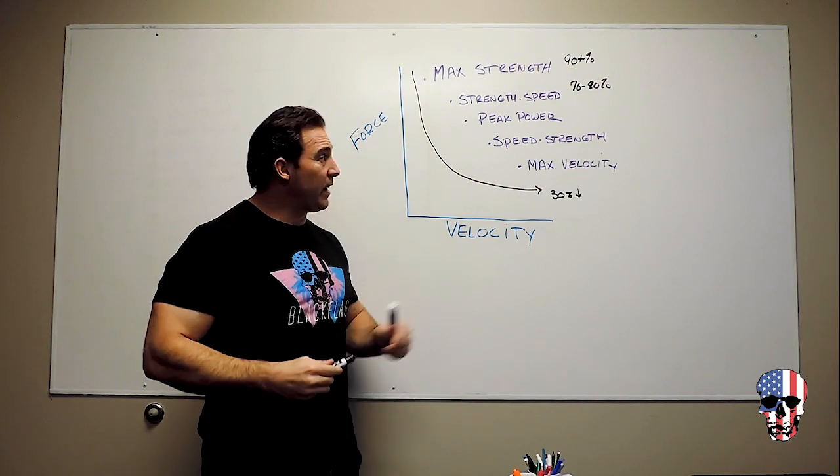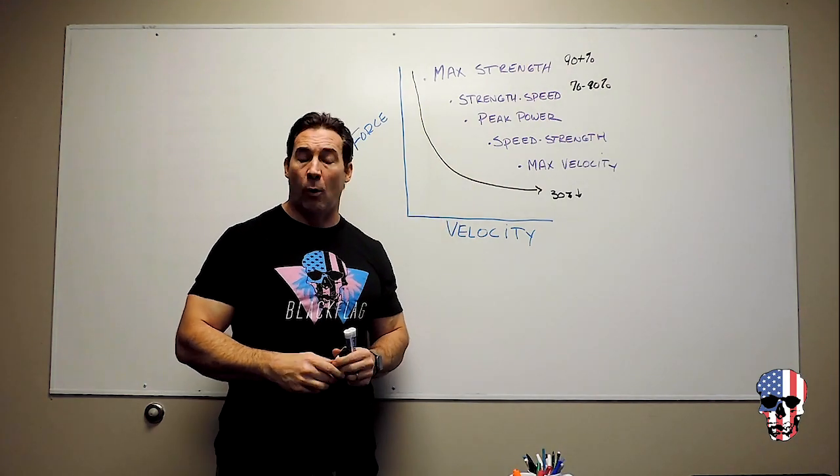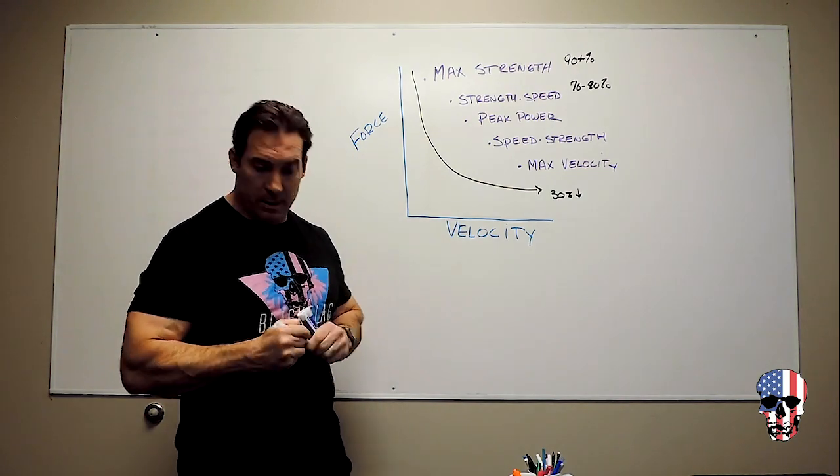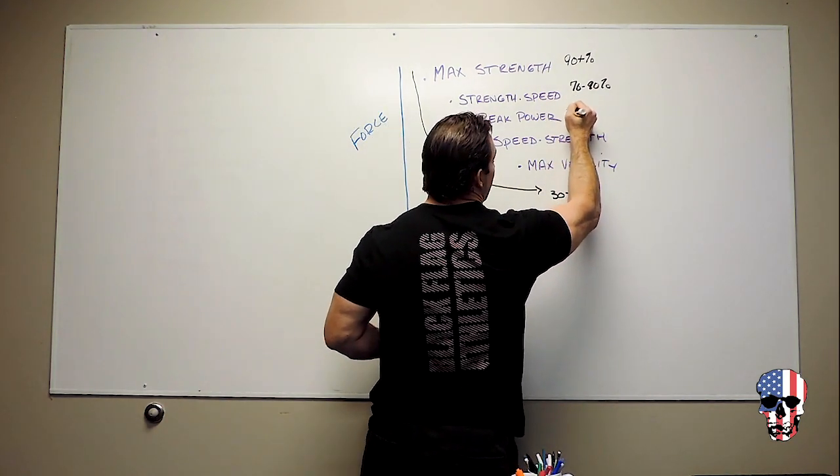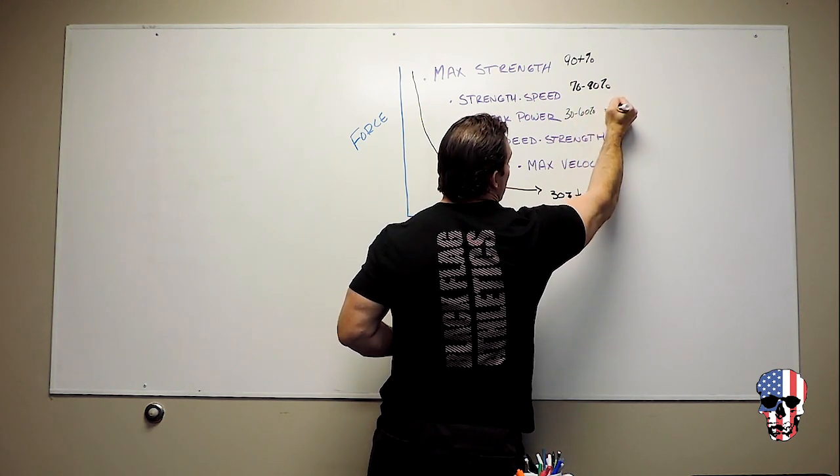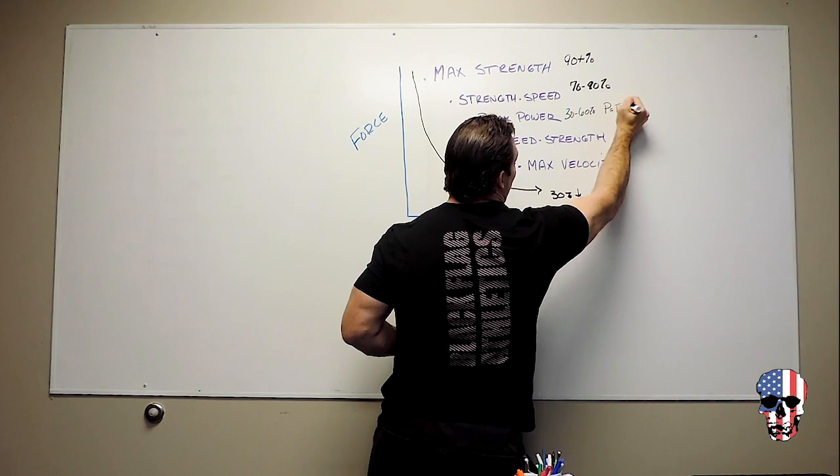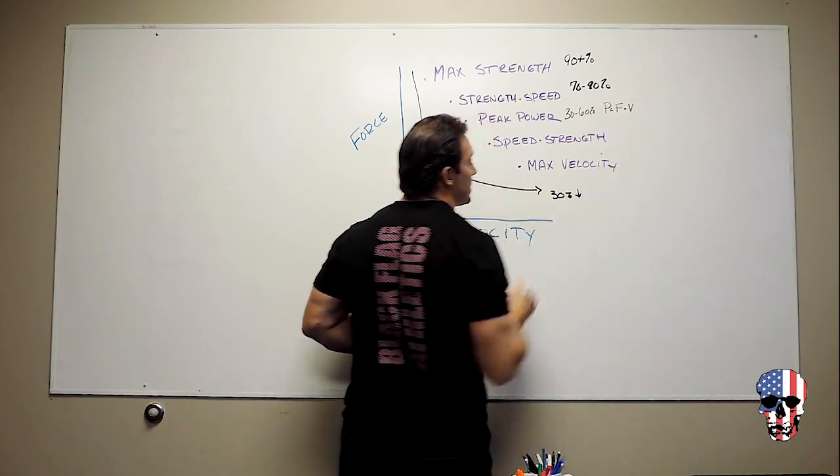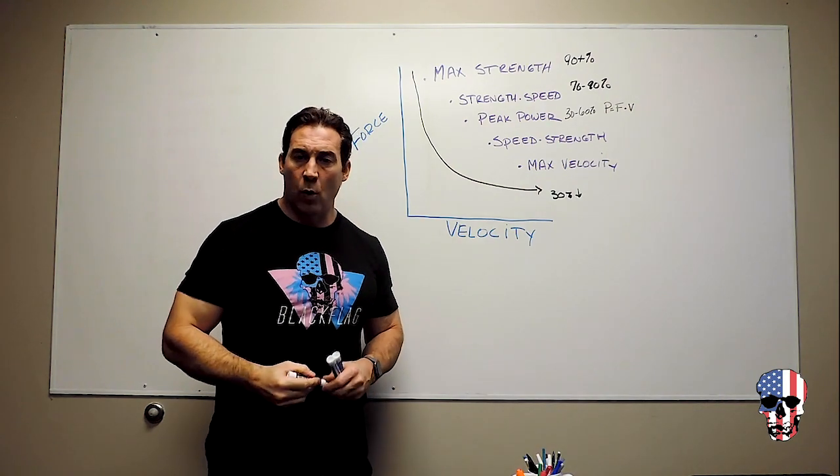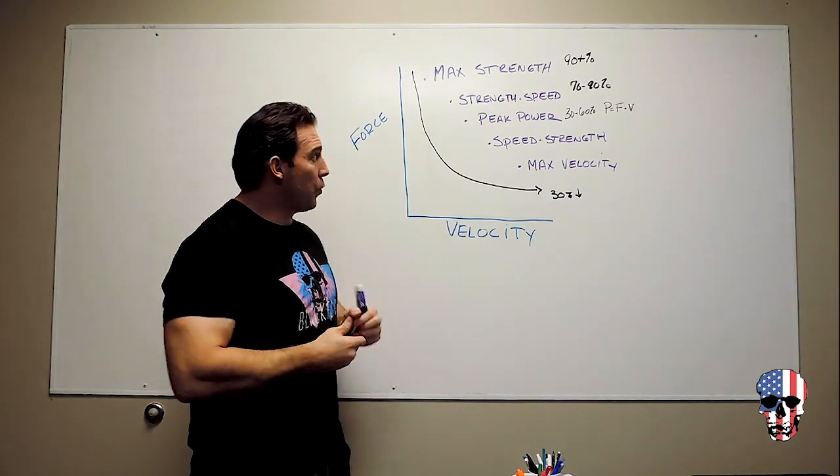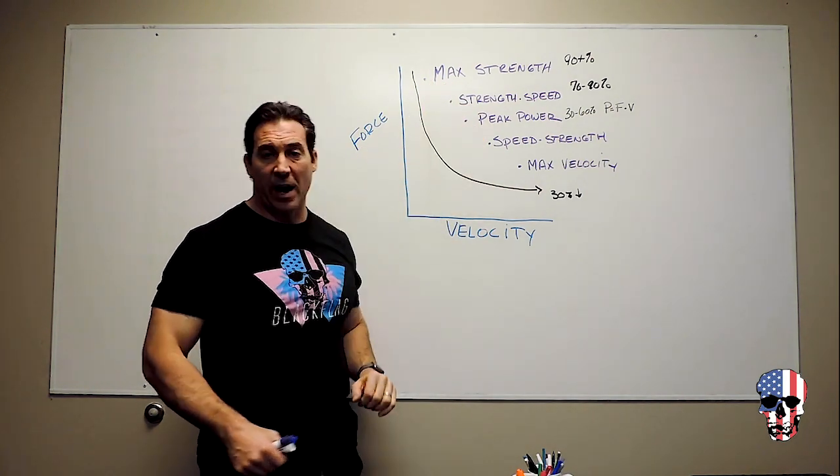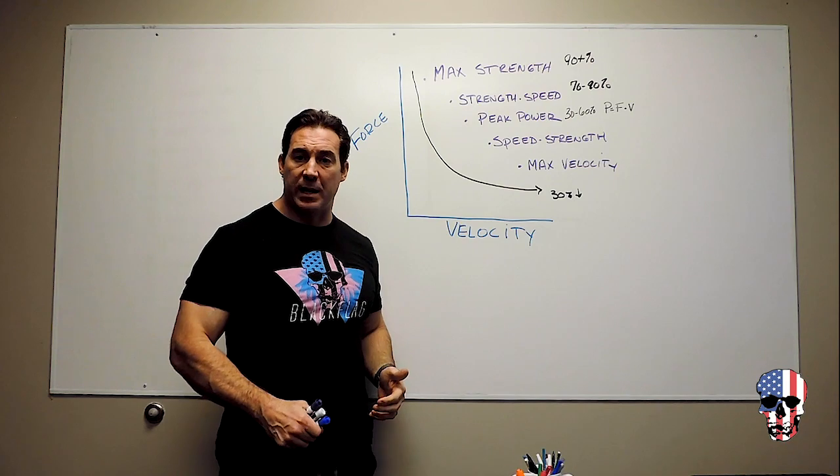In between there, we're working like 30 to 60% as peak power. Power is simply force times velocity. And this is anywhere in that 30 to 60%. We know power equals force times velocity. How quickly can we move something? How quickly can we move an object? So this is where a lot of our Olympic weightlifting falls. We start here, but then we eventually transition into that range right there.